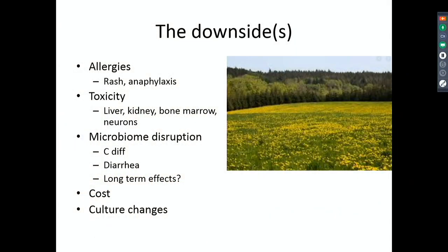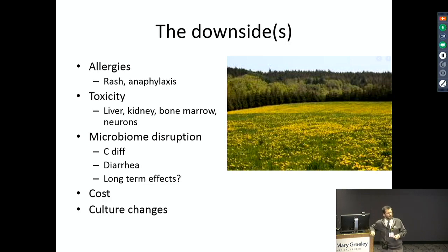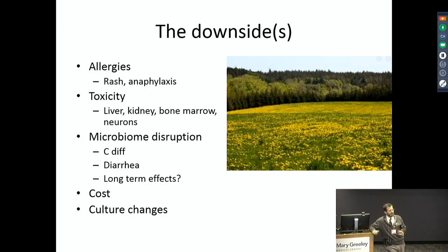Antibiotics do have downsides. There are allergies — bad allergies; people can die from penicillin. People's liver, kidneys, and bone marrows can go bad over time. We're also getting a deeper appreciation for the microbiome. You are one trillion human cells, and you are 10 trillion bacterial cells in your body. If we kill them — we cut down the forest and leave an empty field — that empty field gets invaded by an invasive species. That's what C. diff is: if we cut down the forest of our good guys, that's when you can get the bad guys. There are longer-term effects we may not even know about, whether it's immune regulation, irritable bowel syndrome, or obesity.